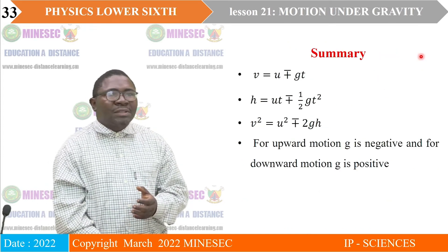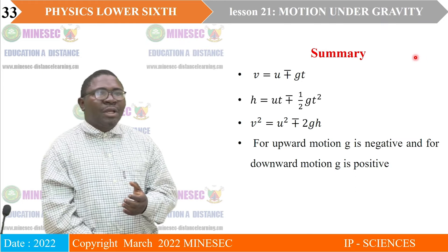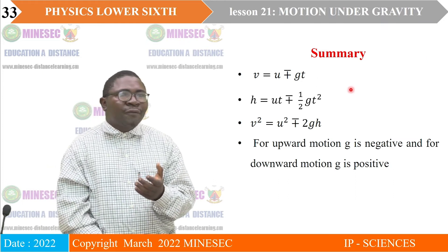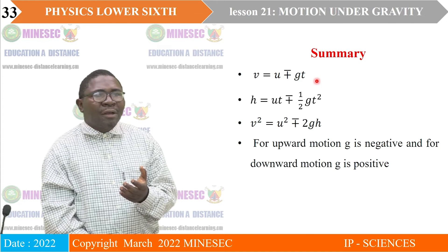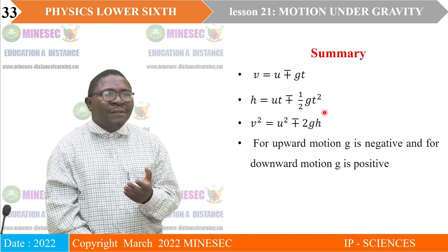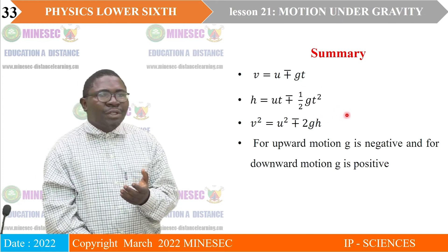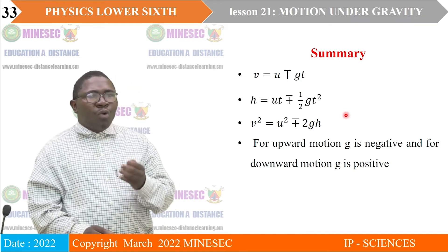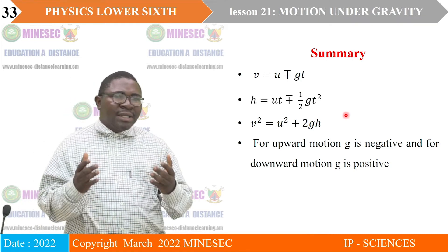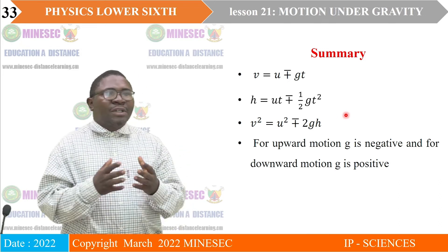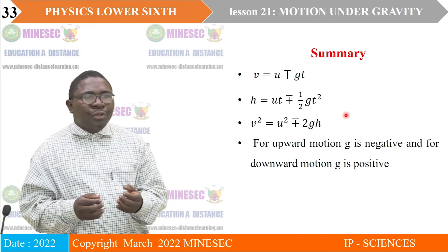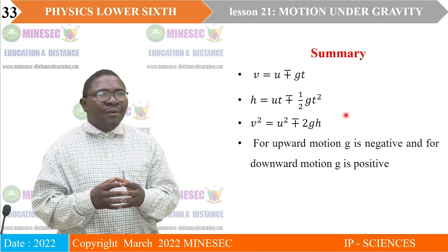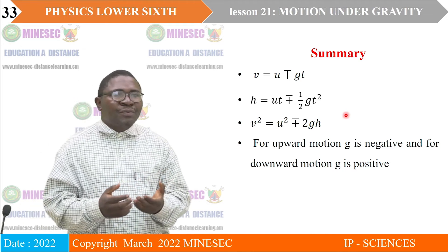As a summary, the equations of motion for objects falling under gravity are these three equations. For upward motion, G is negative. For downward motion, G is always positive. We consider the earth as our reference point.